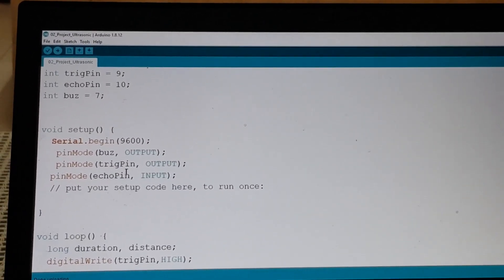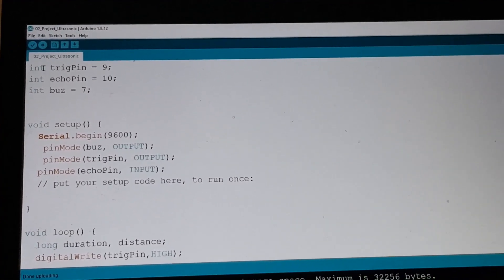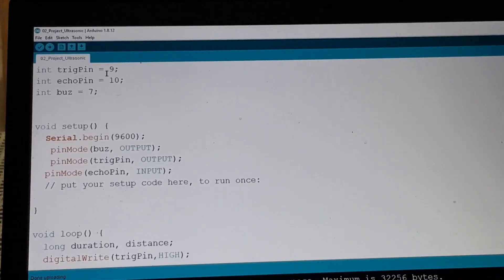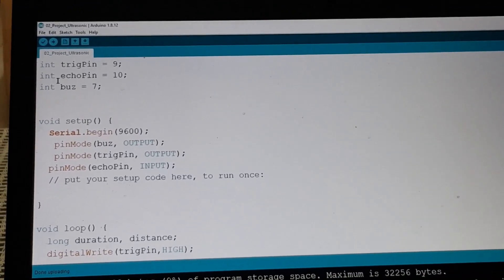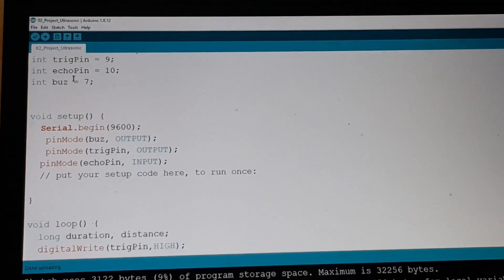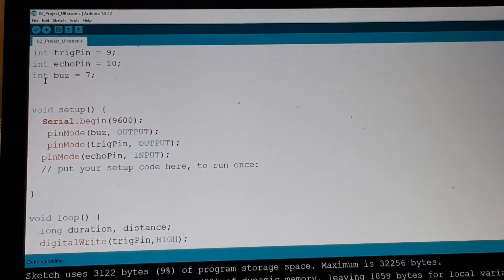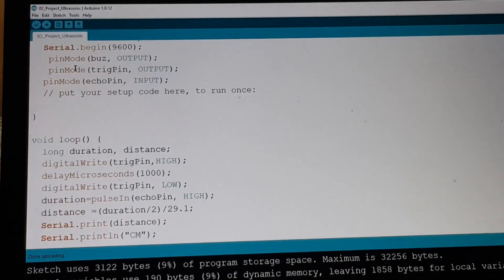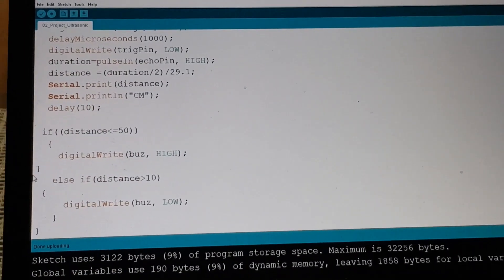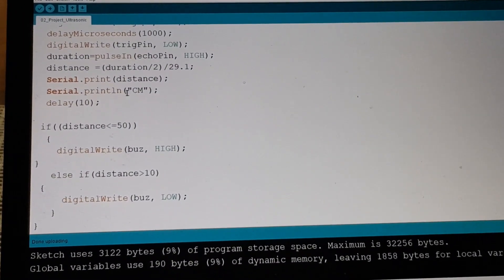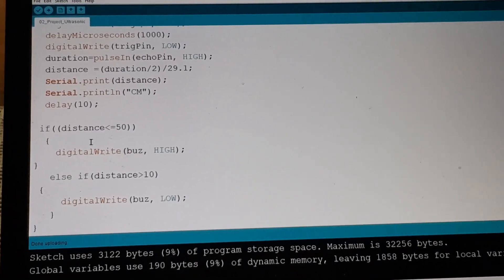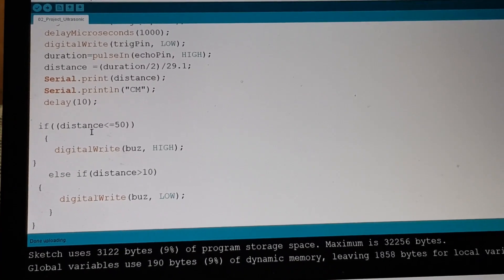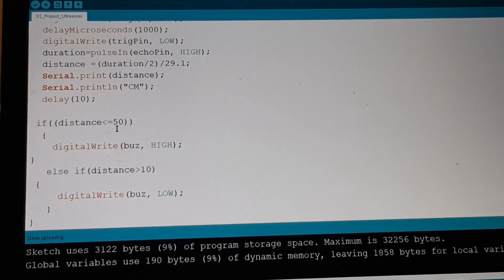So this is the code. It is int, trigger pin is 9, int, echo pin 10, and then again int, and then buzz equals 7. And if I scroll down, we have distance and then centimeters. So this is centimeters. So right now the distance is 50 centimeters.